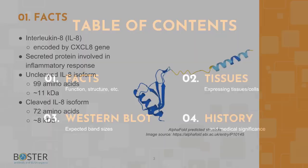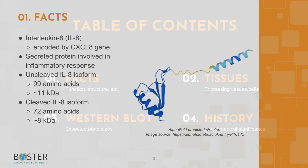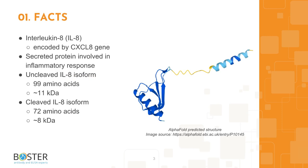Topic one: quick facts about IL-8. Interleukin 8 is a CXC chemokine family member. IL-8 is a secreted protein that is involved in the inflammatory response, attracting neutrophils to sites of infection in the body. Interleukin 8 is 99 amino acids long and runs about 11 kilodaltons on a western blot. This protein can be cleaved at the N-terminal to yield a major IL-8 isoform of 72 amino acids that runs about 8 kilodaltons on a western blot.